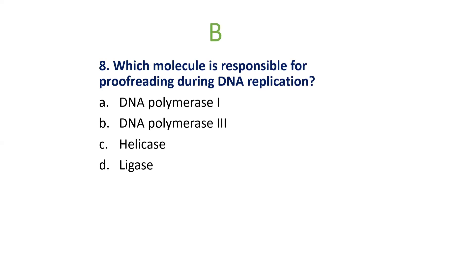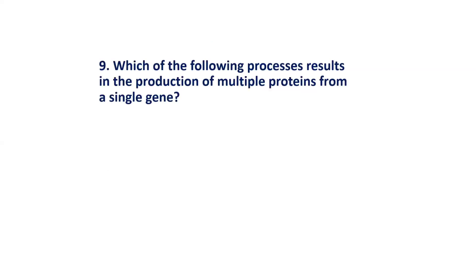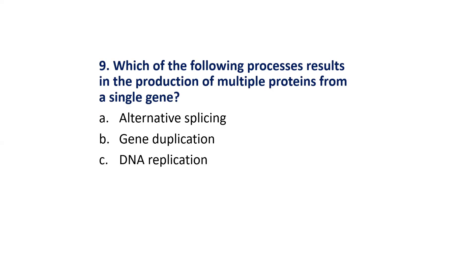MCQ 9: Which of the following processes results in the production of multiple proteins from a single gene? Options are: Alternative splicing; Gene duplication; Gene replication; Recombination. The correct answer is Option A: Alternative splicing.